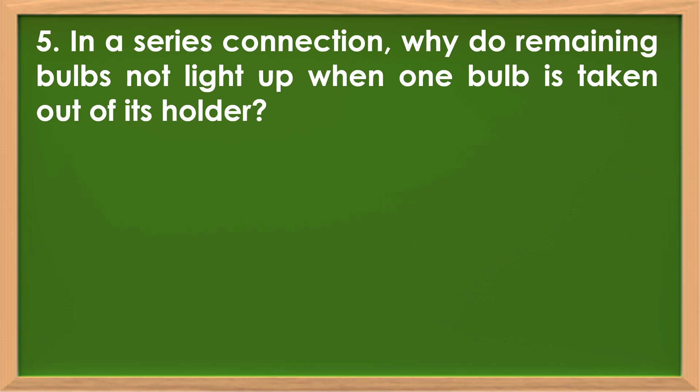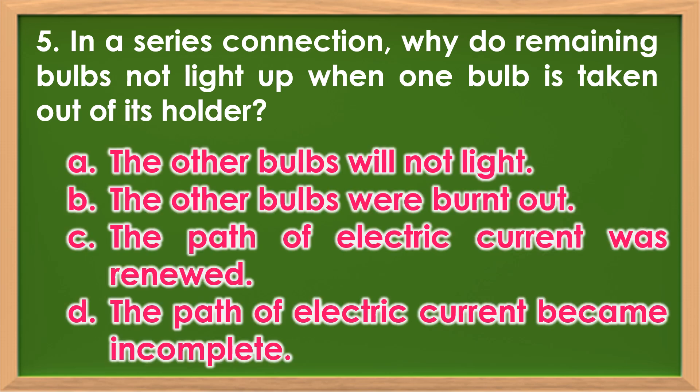Number 5: In a series connection, why do remaining bulbs not light up when one bulb is taken out of its holder? A. The other bulbs will not light. B. The other bulbs will burn out. C. The path of electric current was renewed. D. The path of electric current became incomplete. Very good, the answer is letter D.